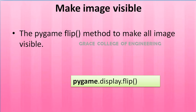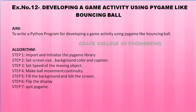Let's see the lab exercise — Exercise 12: Developing a game activity using Pygame like a bouncing ball. Algorithm: Step 1 — Import and initialize the Pygame library. Step 2 — Set screen size, background color, and caption. Step 3 — Set speed of the moving object. Step 4 — Make ball movement continuous. Step 5 — Fill the background and blit the screen. Step 6 — Flip the display. Step 7 — Quit Pygame.